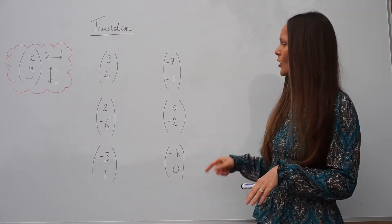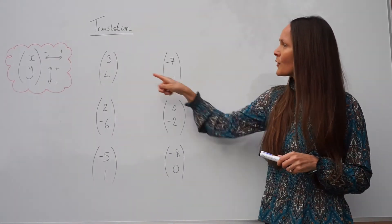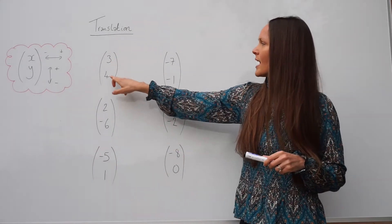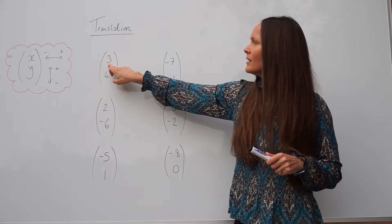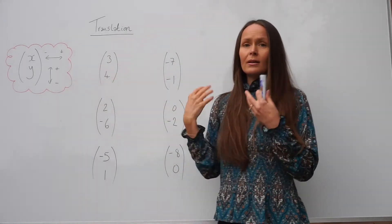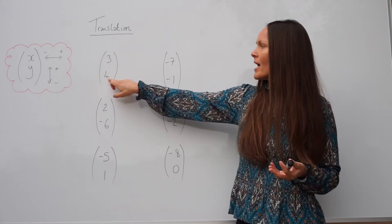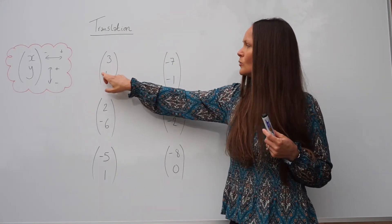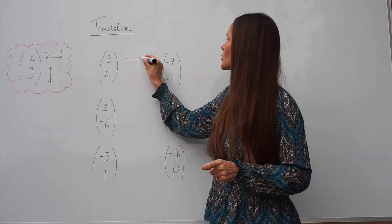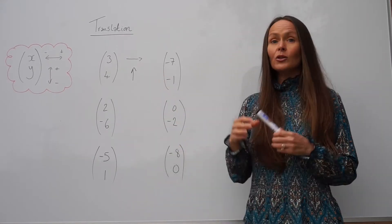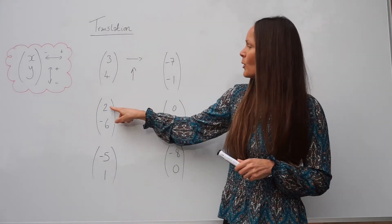Let's look at some examples. In the first one we have two positive numbers, three and four. The top number represents left or right, and since it's positive it means move to the right — so move the shape three units to the right. The bottom number is also positive, so move four units up. You draw the shape in its new position — that's the translated shape.